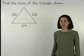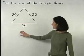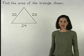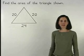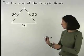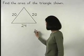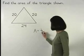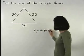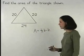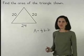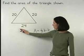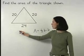To find the area of the triangle shown, we use our formula for the area of a triangle, which is one-half base times height. The base of the triangle has a length of 24, but we don't know the height.